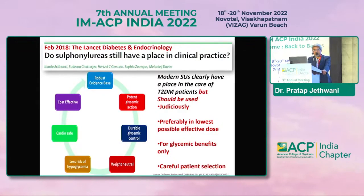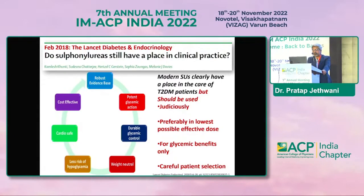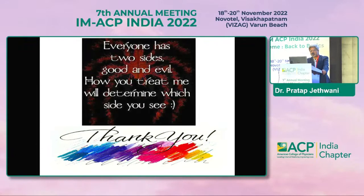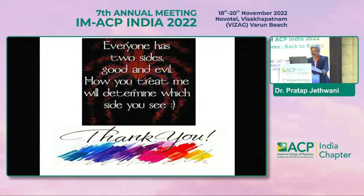Do sulfonylureas still have a place in clinical practice? As highlighted by Professor Kamlesh Khunti, modern sulfonylureas have robust evidence from five decades of experience — very good glycemic efficacy, durability, weight neutral or marginal weight gain, hypoglycemia risk manageable if used smartly, no increased cardiovascular risk, and they are cost-effective, particularly in our country. They should be used judiciously, preferably at the lowest possible effective dose, with careful patient selection. These drugs are for glycemic benefits only — lowering blood glucose — with no pleiotropic benefits like SGLT2 inhibitors or GLP-1 analogs. As sulfonylureas themselves might say: everyone has two sides, good and evil — how you treat them will determine which side you see.